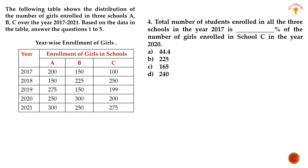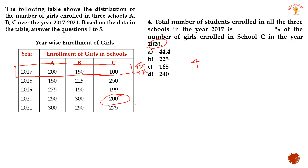Next question: Total number of students enrolled in all three schools in the year 2017 is what percentage of the number of girls enrolled in school C in the year 2020? In 2017, there are three schools — we look at the number of students enrolled in 2017. In 2020, school C is 200.